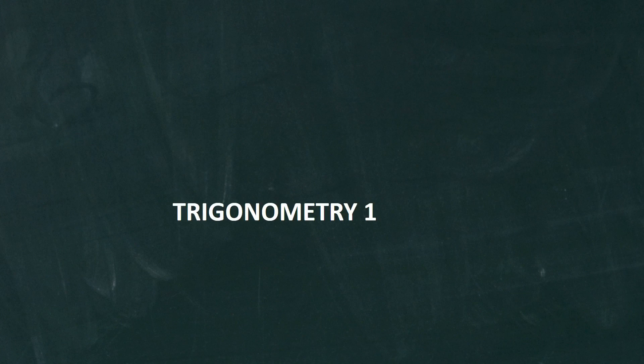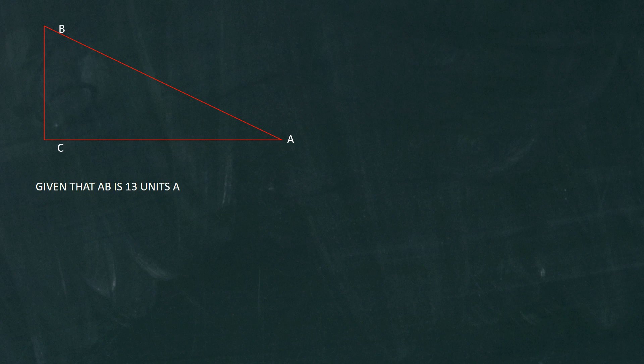This is Maturaba again, this time taking you through trigonometry. I'll call this trigonometry 1 since we're going to do many examples. Let's look at this particular example. In this example we're given a right angle triangle named ABC.